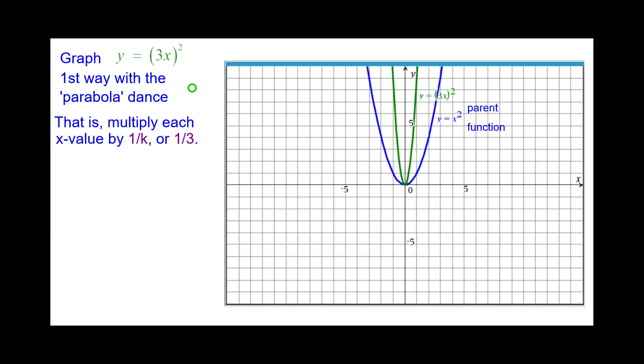Comparing that to the parent function, we pick two points. On the green it's 1 comma 9. On the blue it's 3 comma 9. You can see the x coordinates. Green times 3 is the blue x-coordinate while the y-coordinates remain identical. So we say there's a horizontal dilation factor of 1 third. And this is a horizontal shrink.